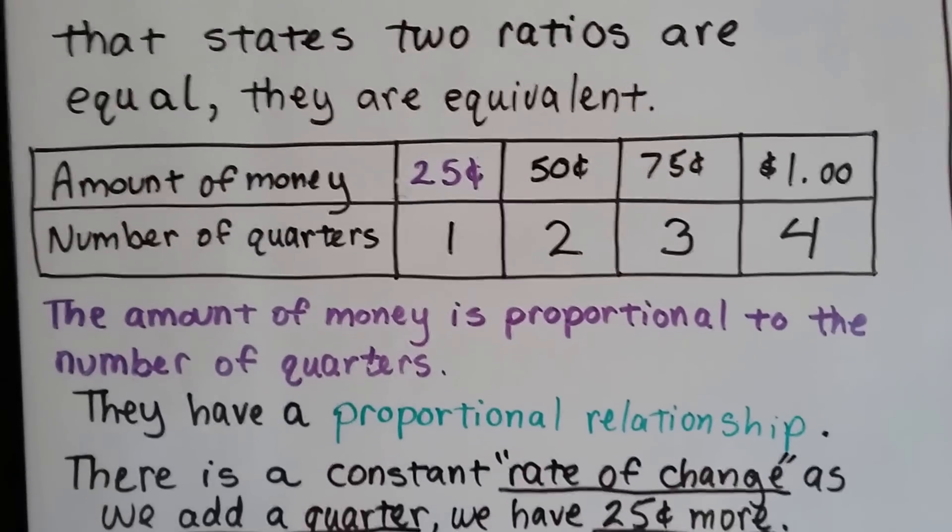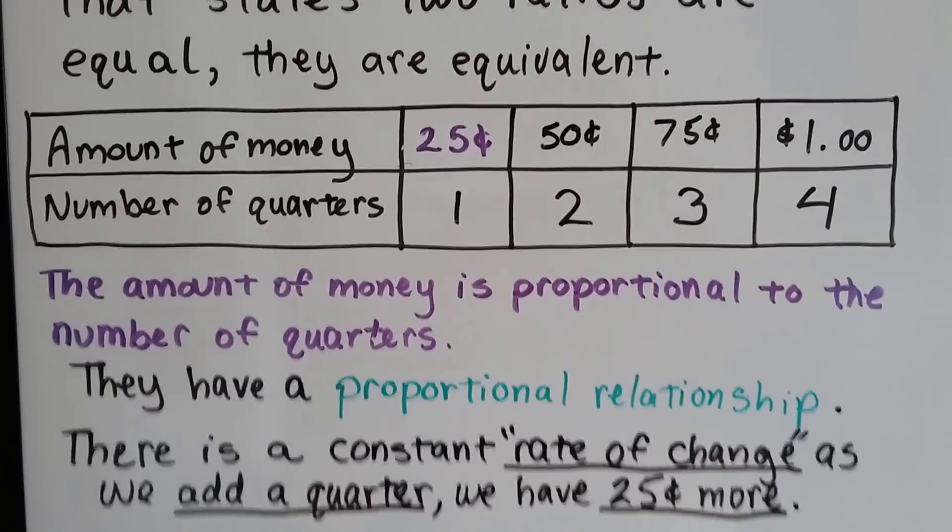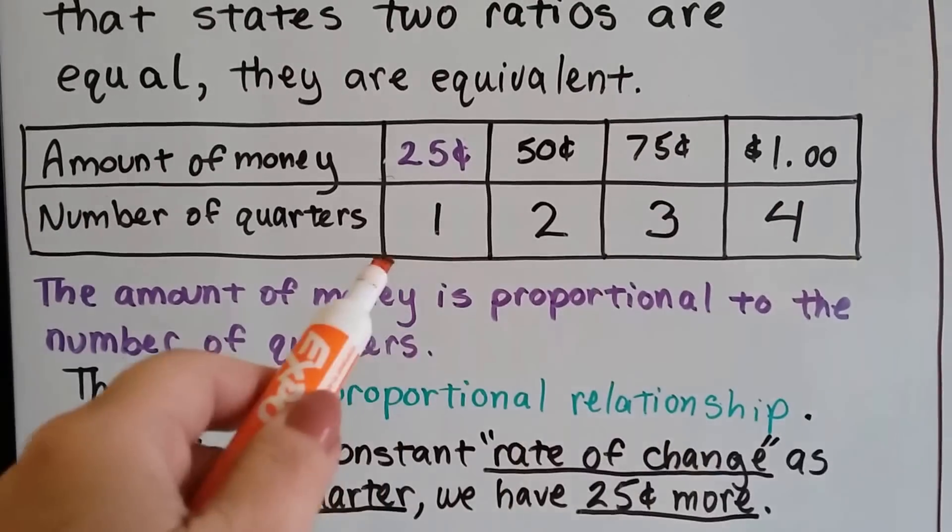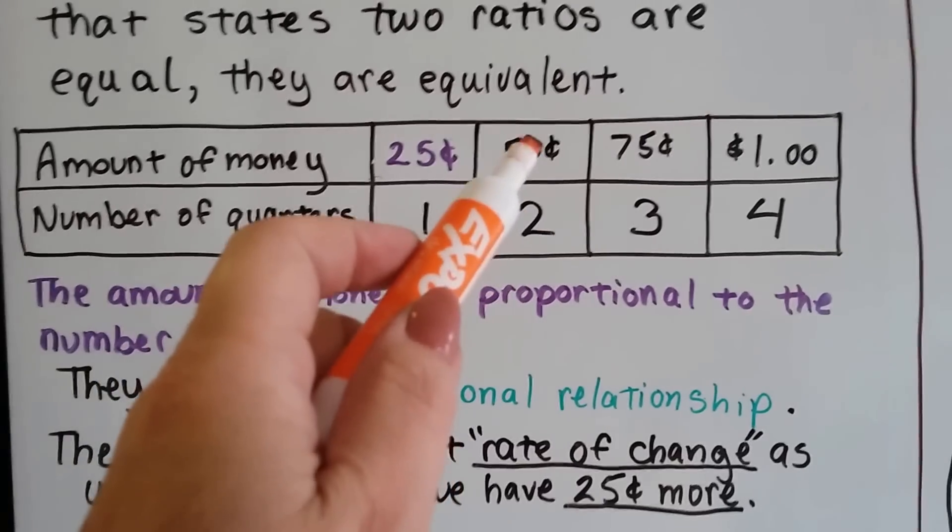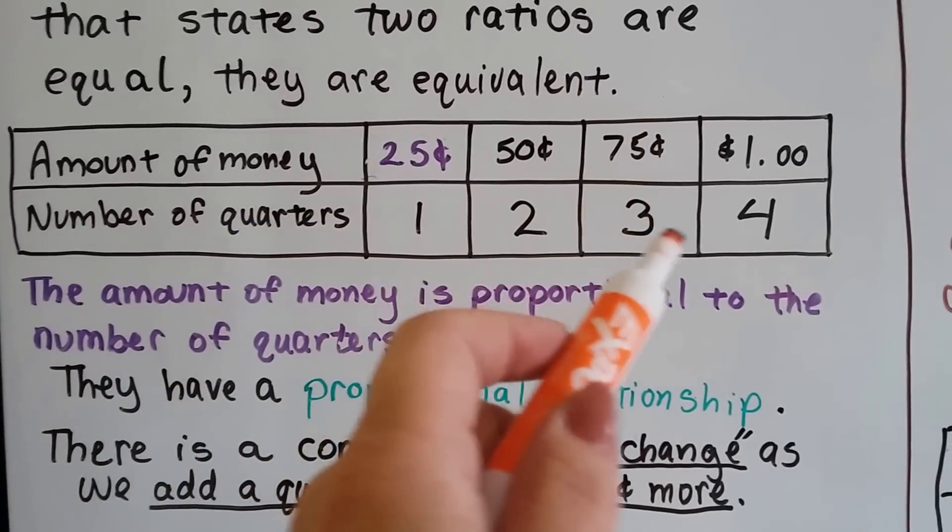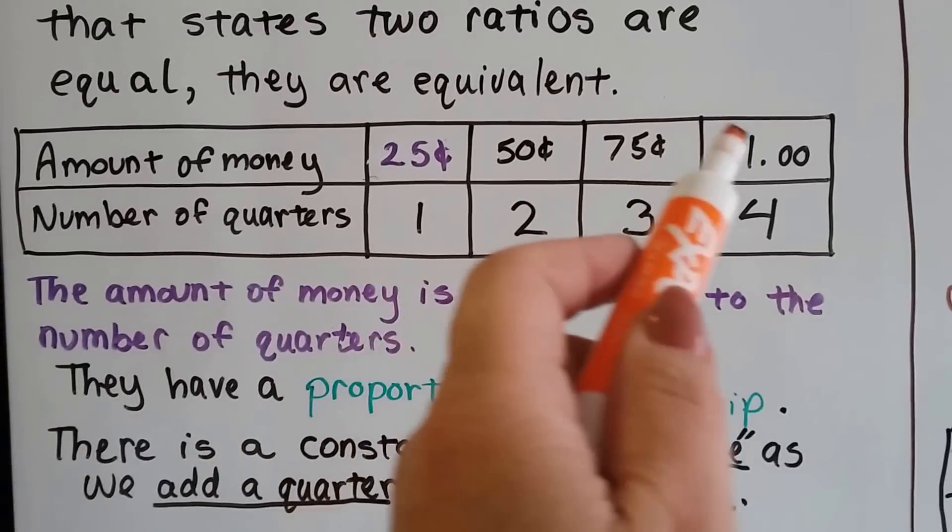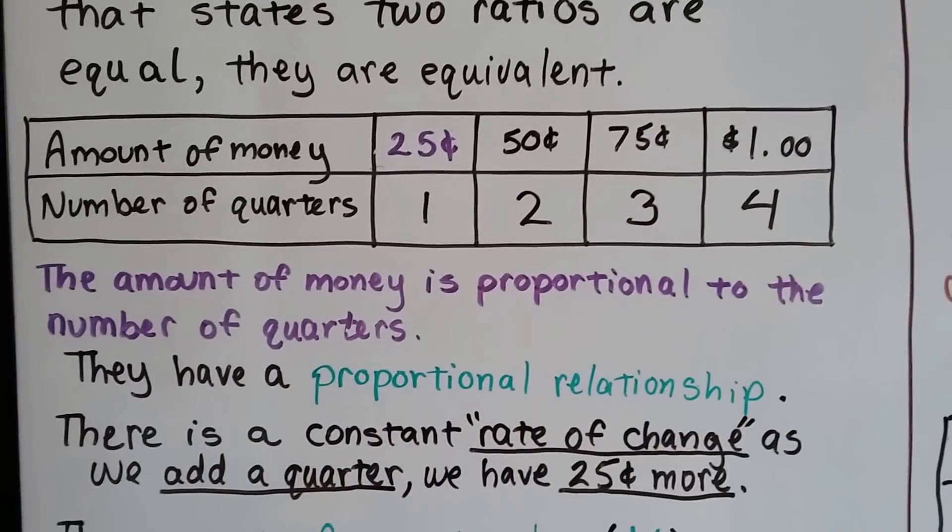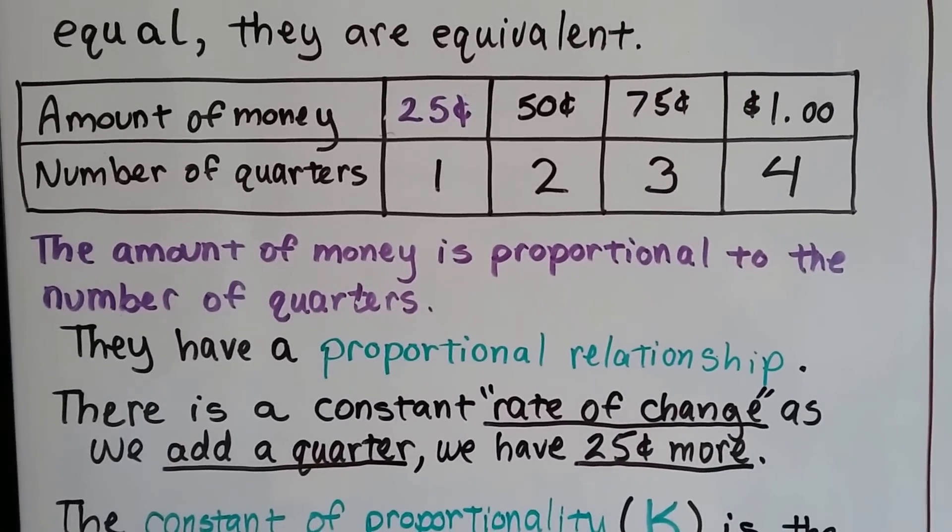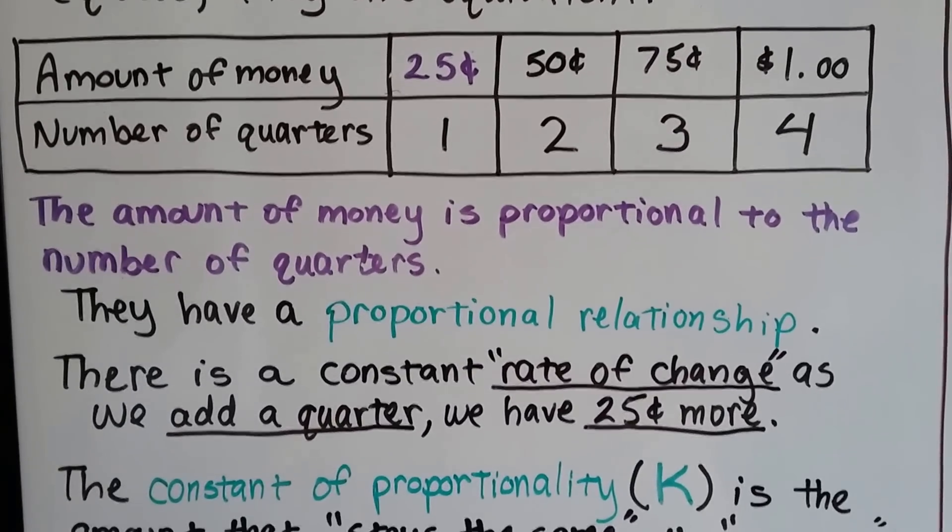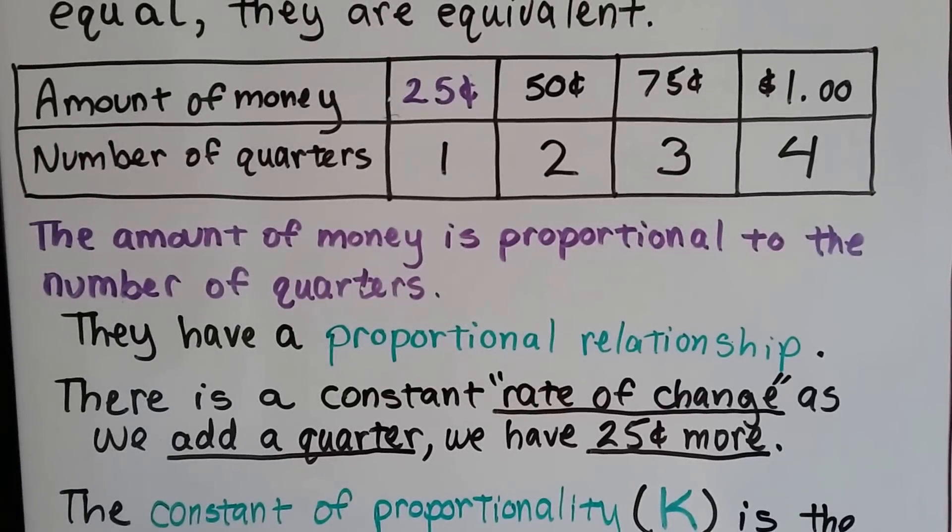We had this example. The amount of money you have compared to the number of quarters you have are in proportion to each other. If I have one quarter, I'll have 25 cents. If I have two quarters, I'll have 50 cents. Three quarters, I'll have 75, and four, I'll have a dollar. It goes up by 25 cents as these go up by one number. The amount of money is proportional to the number of quarters. They have a proportional relationship. There's a constant rate of change as we add a quarter. We have 25 cents more.